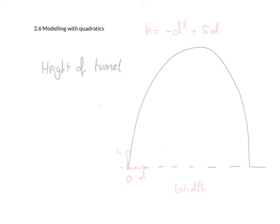Okay, chapter 2.6, modelling with quadratics. The last example was a projectile, so something moving through the path of a quadratic. Here I'm going to be modelling the cross-section of a tunnel using the equation at the top.